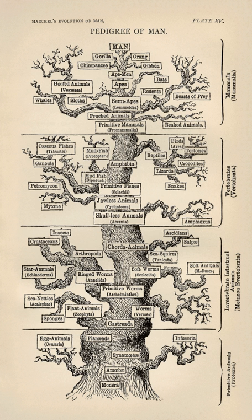Resources and ecological processes: Resource availability plays a central role in ecological processes, including carrying capacity, biological competition, Liebig's law of the minimum, and niche differentiation.